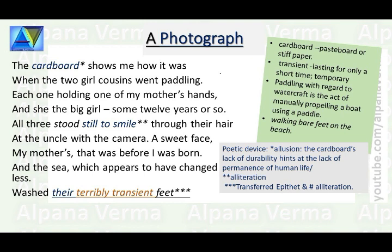When the two girl cousins went paddling, each one holding one of my mother's hands, and she the big girl, some 12 years or so — what is paddling? In the context of this poem, walking bare feet on the beach is the appropriate meaning. The big girl was the poet's mother. Each of the cousins held one of her hands; the poet's mother was about 12 years old and was the eldest among them.